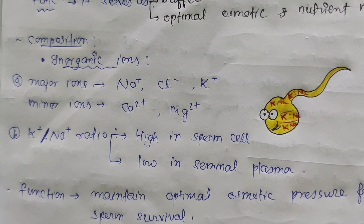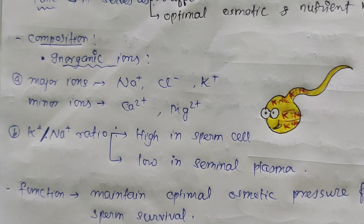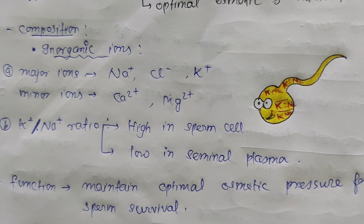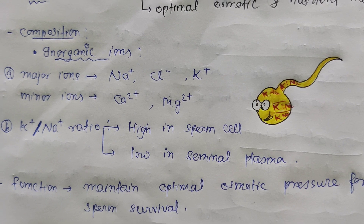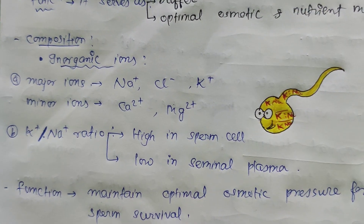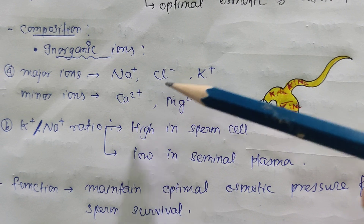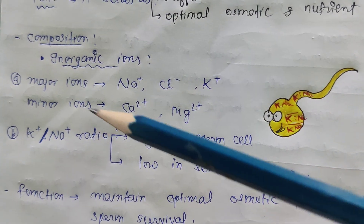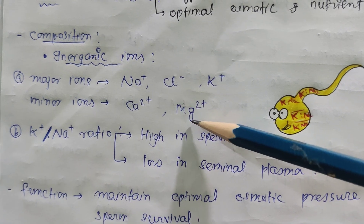Moving to the composition of seminal plasma: first, inorganic ions. There are two types — major ions and minor ions. The major ions are sodium, chlorine, and potassium. The minor ions are calcium and magnesium.